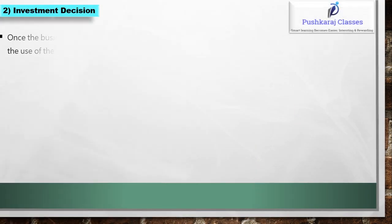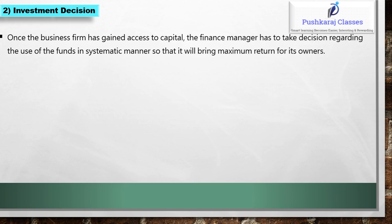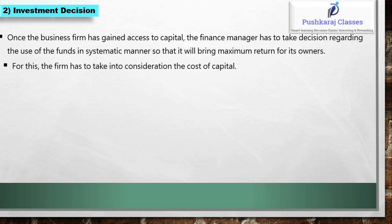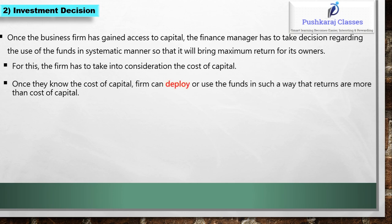Investment decision: Once the business firm has gained access to capital, the finance manager has to take a decision regarding the use of funds in a systematic manner so that it will bring maximum return for its owners. For this, the firm has to take into consideration the cost of capital. Once they know the cost of capital, the firm can deploy or use the funds in such a way that returns are more than the cost of capital.